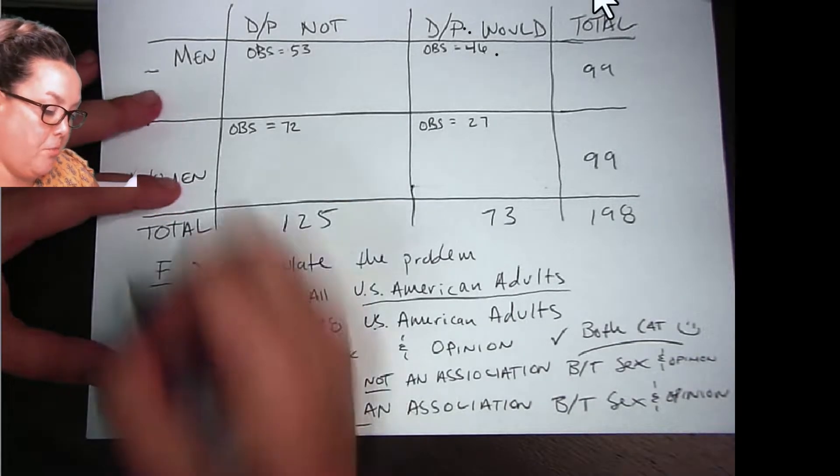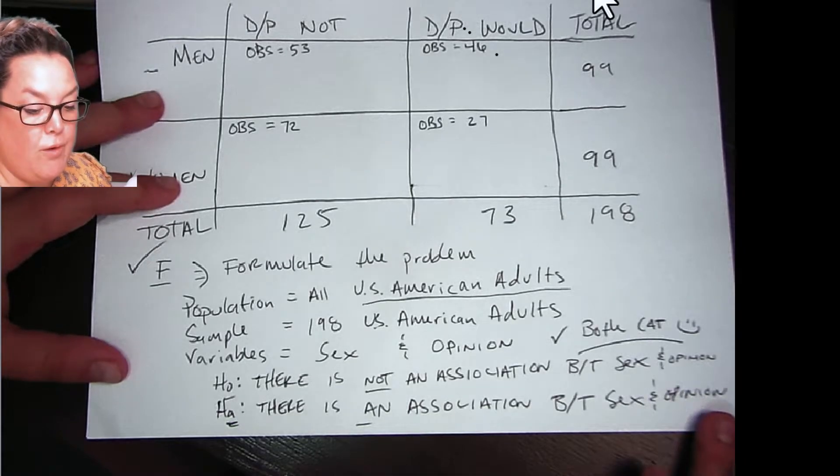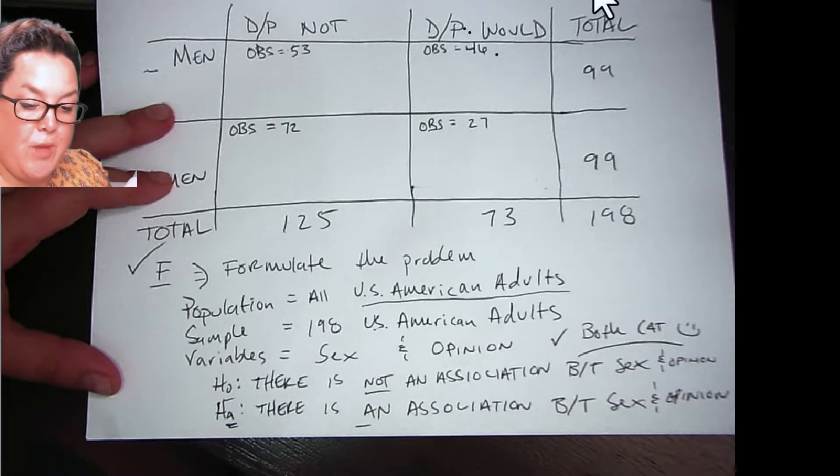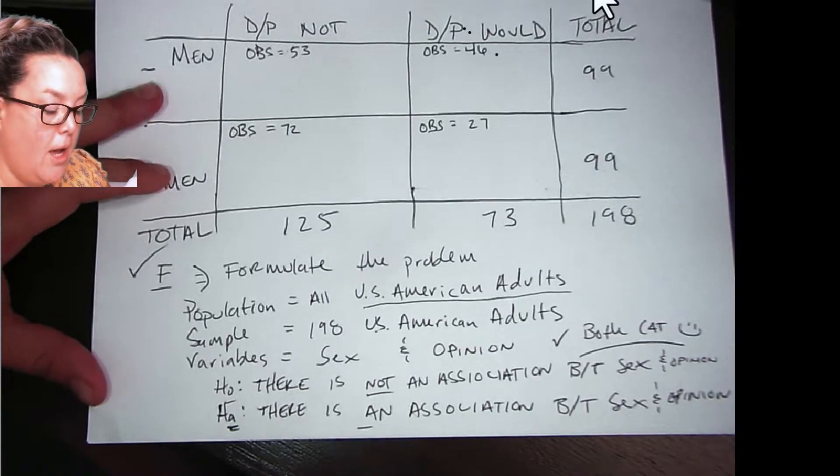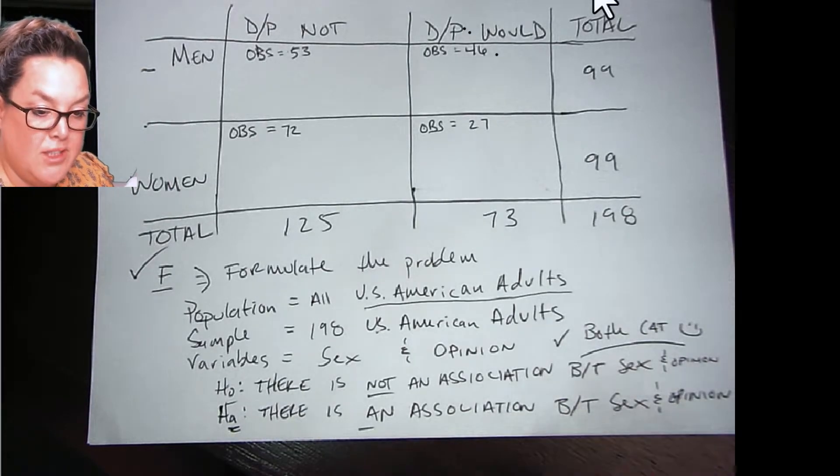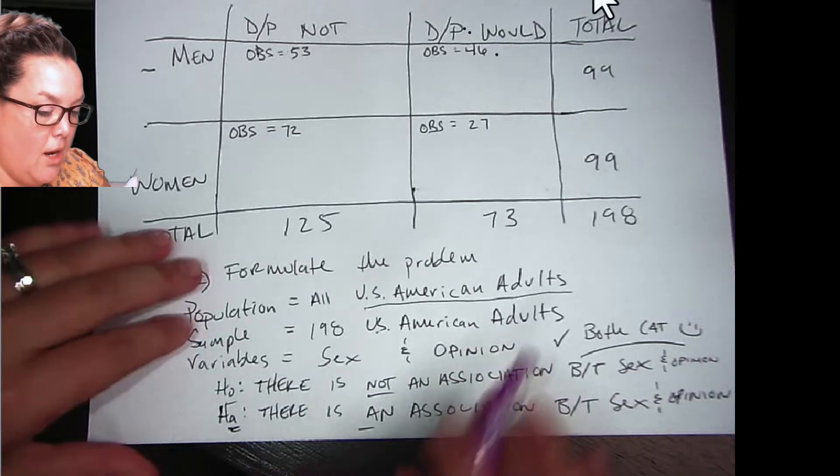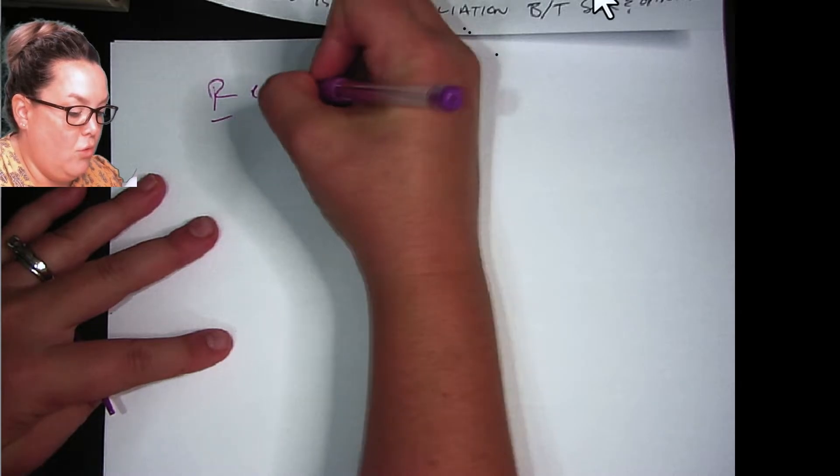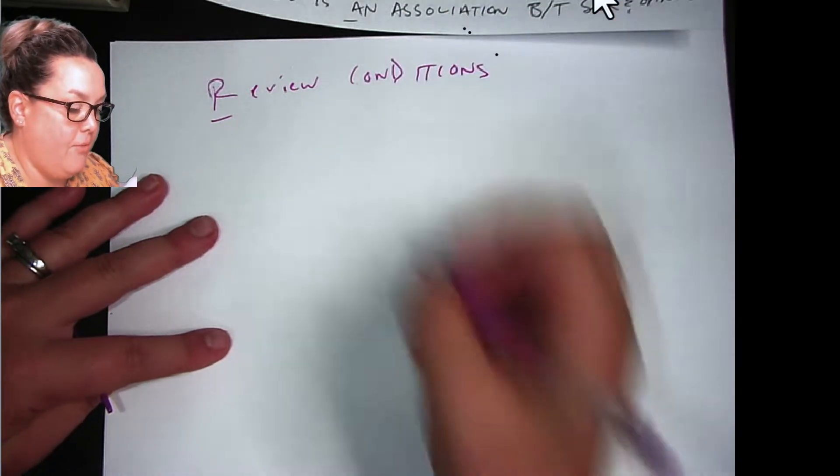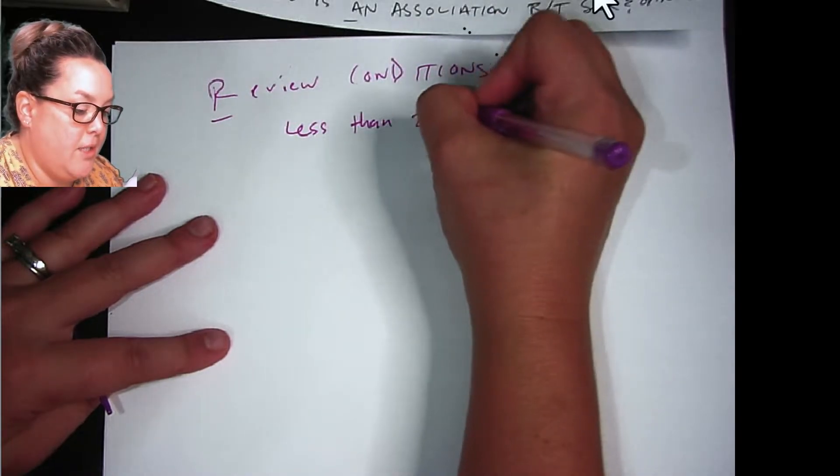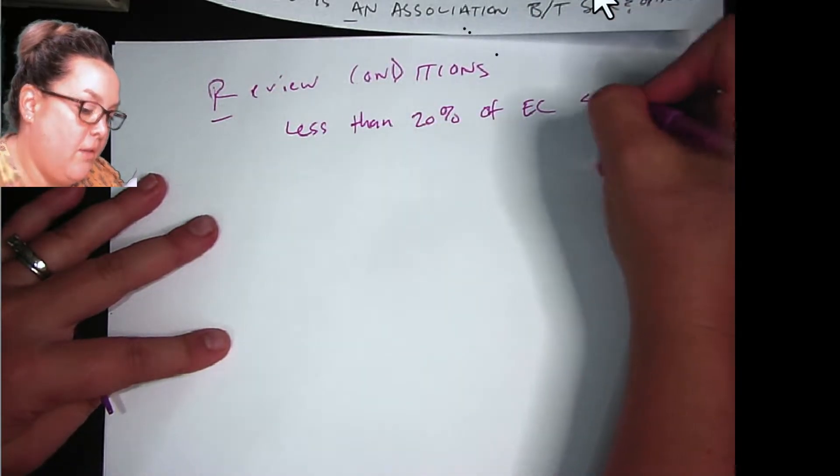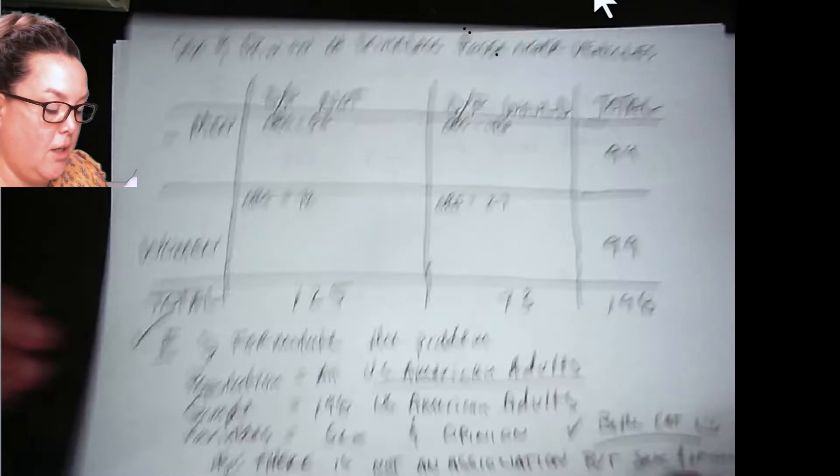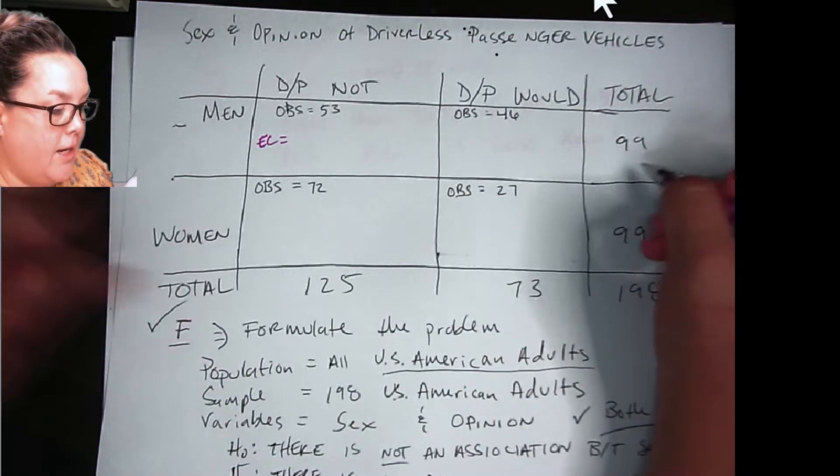All right, so that's the first part of Fred done with that. Now we're going to move on to the R, which if you remember is reviewing conditions. So to do that, I actually need to calculate my expected counts because reviewing conditions requires that. The R in Fred is review conditions. And we need to have less than 20% of expected counts less than five, and no expected count is less than one. So we're going to check that, but we have to calculate the expected counts.